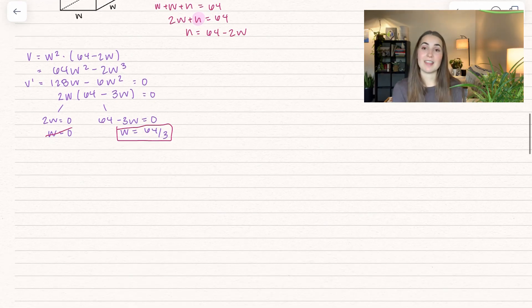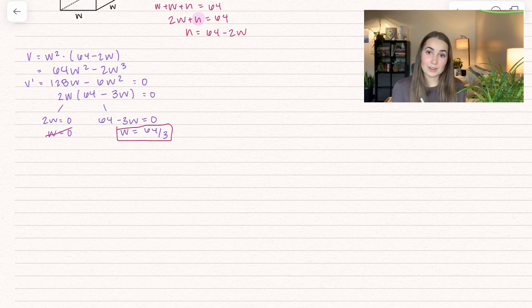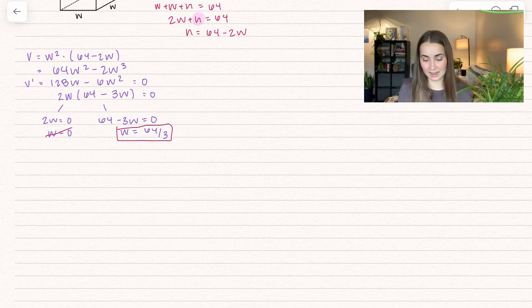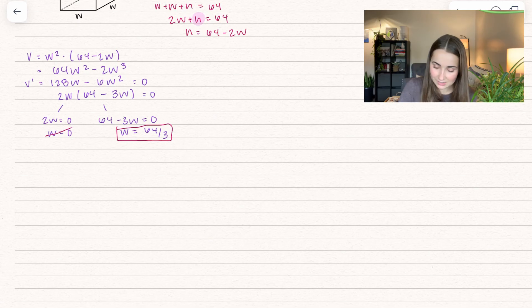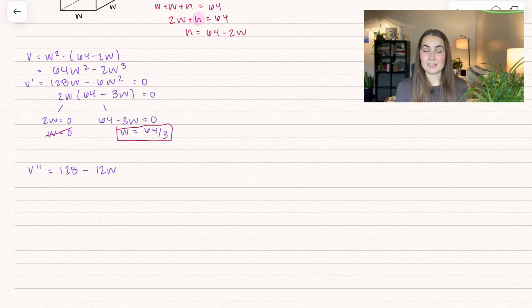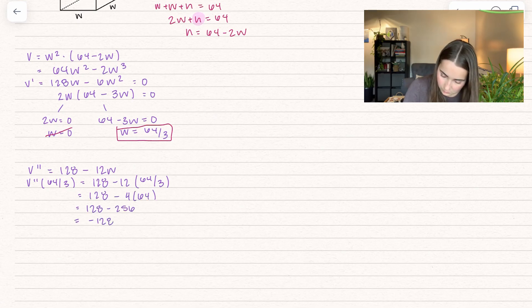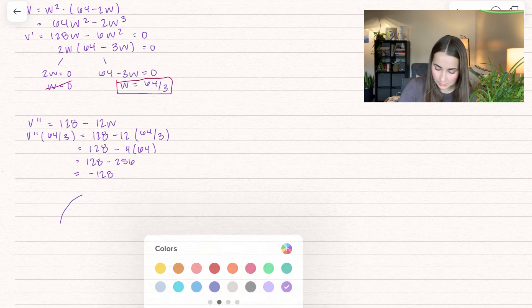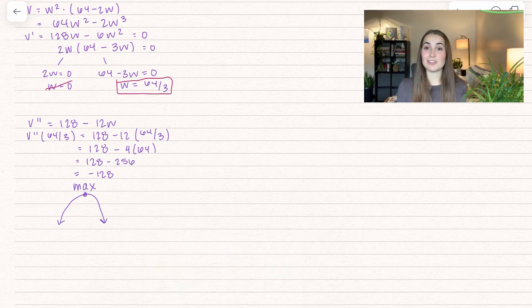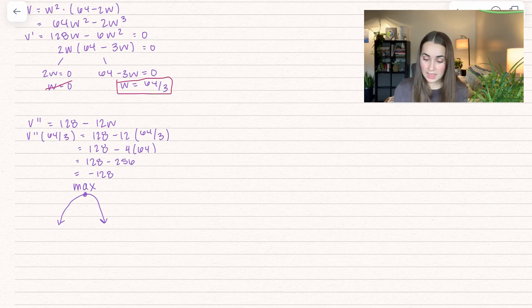For our next step, we can either use the first derivative test - set up the interval to see where it's increasing and decreasing - or we can use the second derivative test, which I'm going to use. I think that one's really nice. Let's take the second derivative. Now we want to see if this is positive or negative at our critical value, because that tells us if it's concave up or down. Let's plug in 64 divided by 3. I got a negative value, which tells me I'm concave down. So we can see this dimension maximizes the volume.